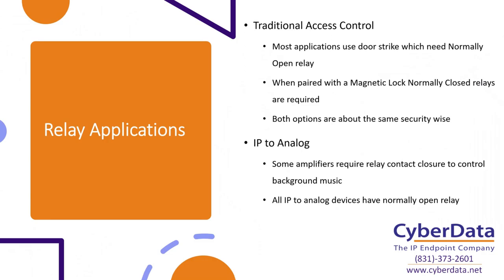When dealing with your IP-to-analog system, some amplifiers — not all of them — require some kind of a relay contact closure to control the background music. They're using the analog amplifier for background music or other audio when idle, and when a device gets higher priority audio, it triggers the onboard relay, which triggers the analog amplifier to play that audio. Every IP-to-analog device I've ever interfaced with that needs a relay is going to be a normally open style relay where you short the two pins together to cause something to happen.